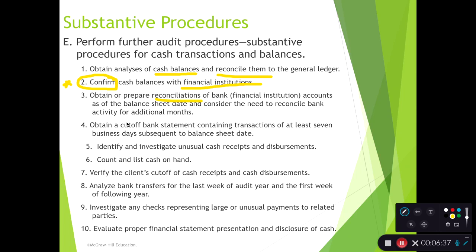Sometimes you'll do a cutoff statement, looking at whether all cash receipts were recorded in the proper period. Do we actually see a bank statement showing some of those deposits the client booked as of the balance sheet date? For example, if they say they got a deposit on 12/31 and are counting it towards cash, but the bank statement shows the deposit wasn't made until after year end, then we might have an adjustment that hits the cutoff assertion.